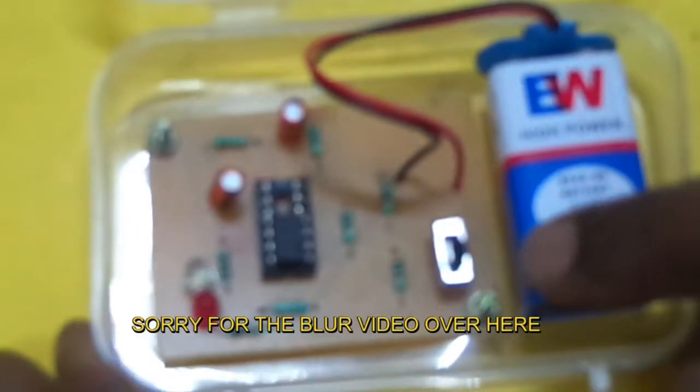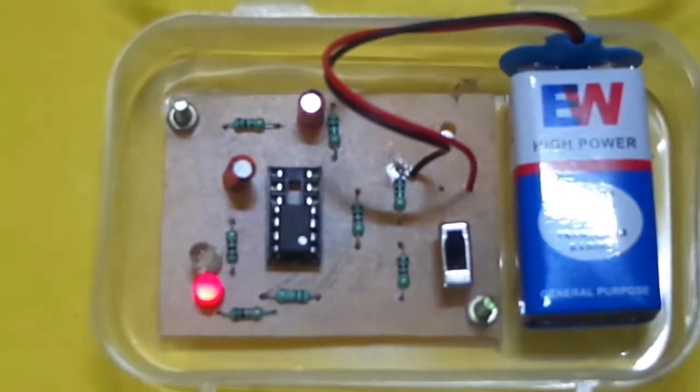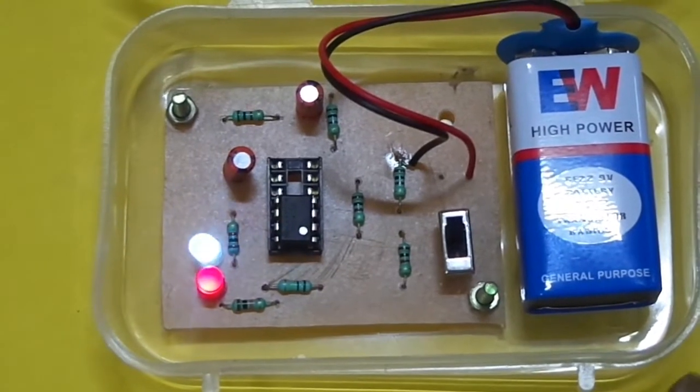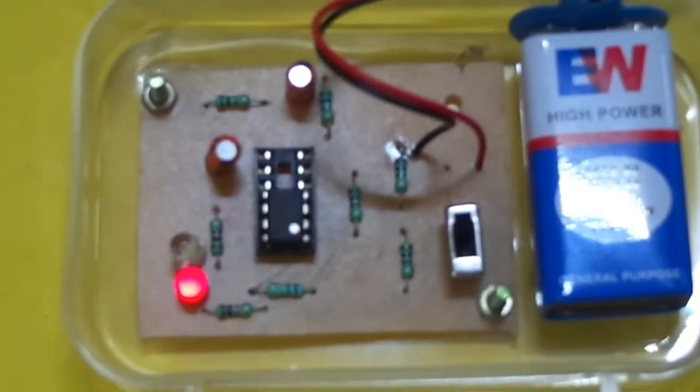Now you can check the working of this circuit. Here, the red LED is the power-on LED, and the white LED is blinking. That means the IC is in working condition.